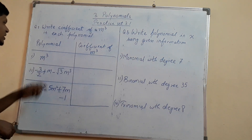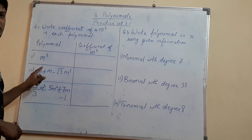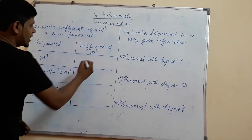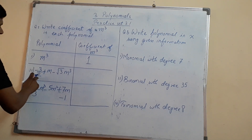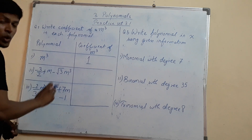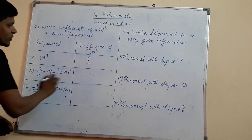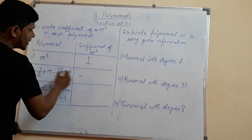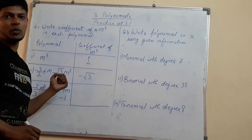So let us see the first one. Here it is written mq. There is no number written but here it is 1, so the coefficient of mq is 1. And here if we see minus 3 by 2 plus m minus root 3 mq, the coefficient with mq is minus root 3. So that is the number along with its sign.